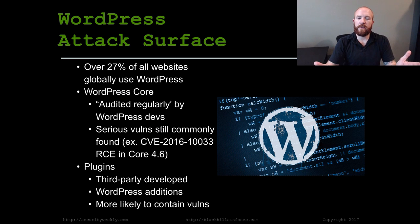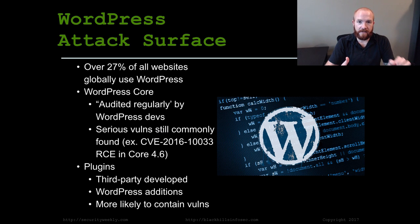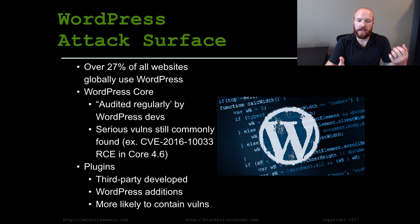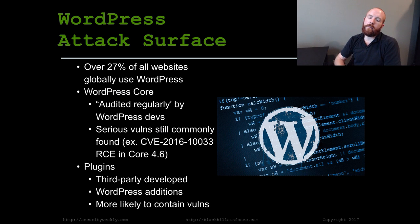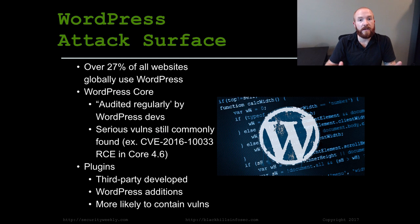Serious vulnerabilities are still very commonly found in WordPress core, though probably not as serious as some of the ones that come along in some of the later pieces I'm going to talk about. For example, there was a remote code execution vulnerability found in core 4.6 not too long ago. But it does at least have some eyes to hopefully weed out the various bugs prior to a serious vulnerability being introduced.